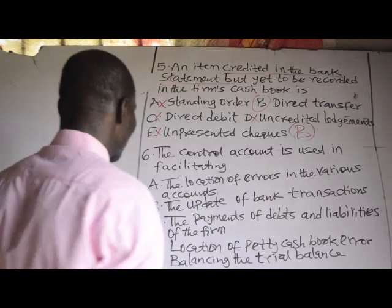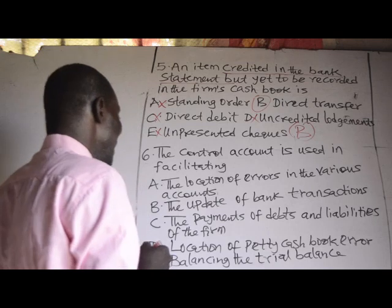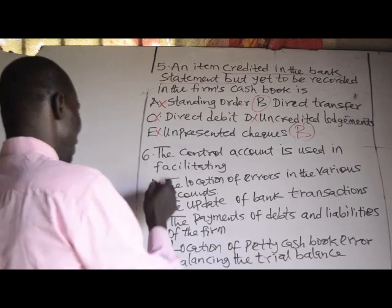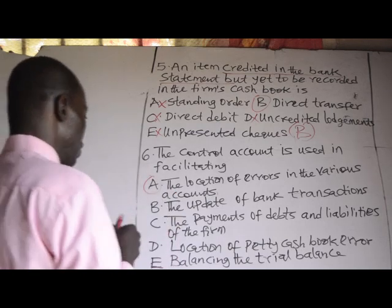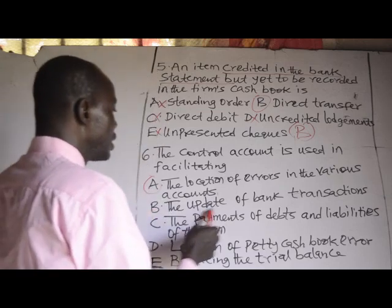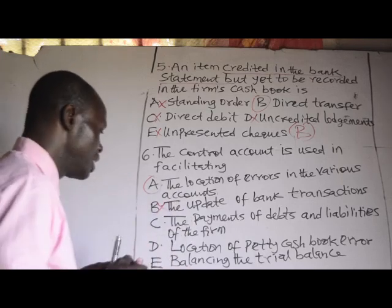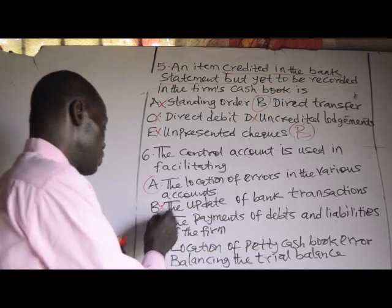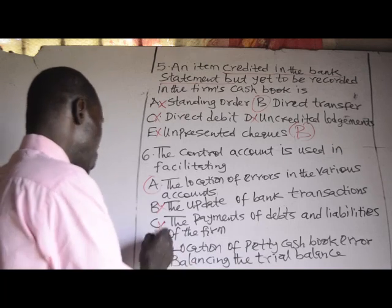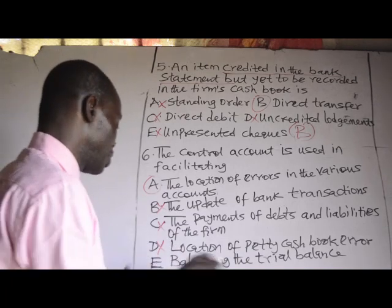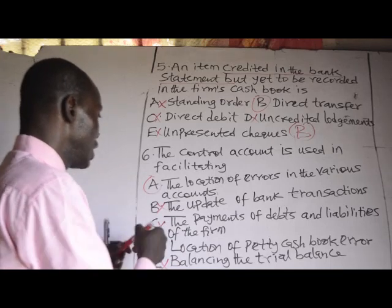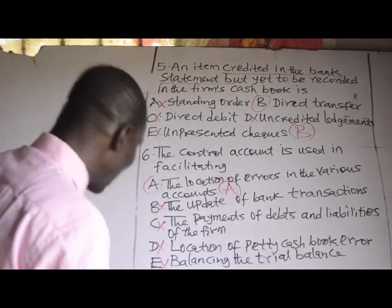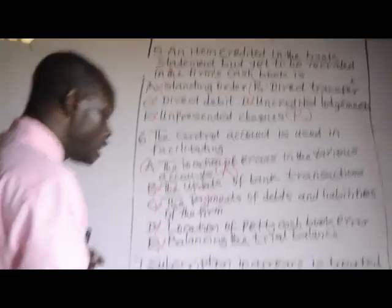Number six: the contra account is used in facilitating what? A — the location of errors in various accounts, yes. We use the contra account to locate errors. B — the update of bank transactions, no; C — the payment of debts and liabilities, no; D — location of petty cash book errors, no; E — balancing the trial balance, no. The correct answer is option A.